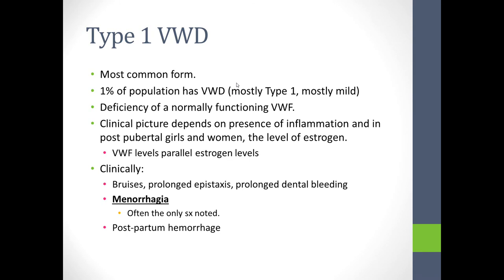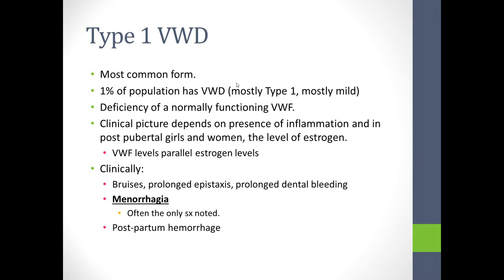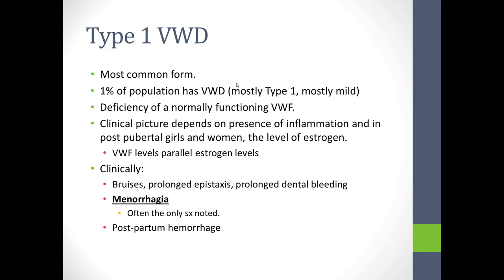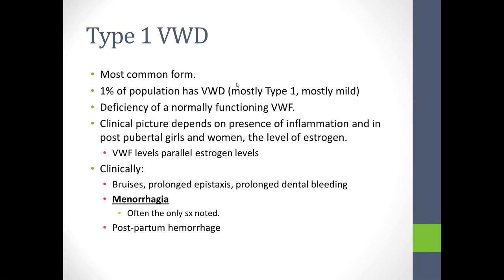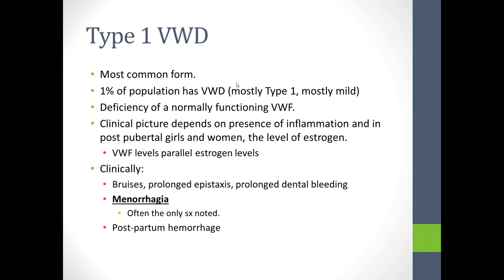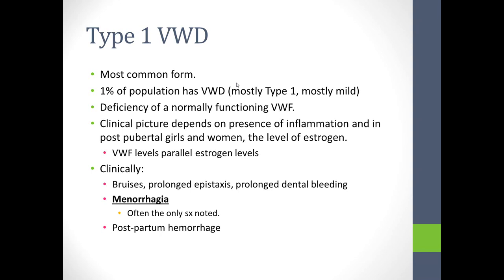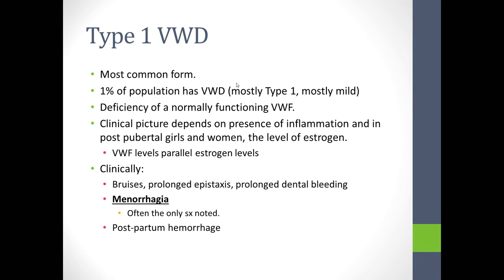Type 1 von Willebrand disease is the most common form — approximately 1% of the population has it — a deficiency of normally functioning von Willebrand factor. The clinical picture depends on the degree of acute inflammation, and mild colds or mild allergies will change the level of this factor quite a lot. In women who are post-puberty, von Willebrand factor parallels the estrogen level, cycling through the menstrual phase. Von Willebrand factor is highest mid-cycle and lowest at the beginning of menses.